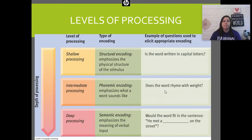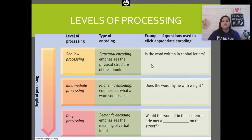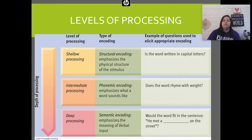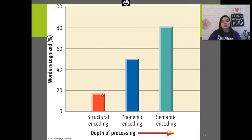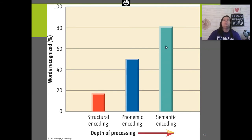We can also look at different levels of processing — how deeply we process information. At a shallow level, we look at structural components: was it written in capital letters, what font was it in? Intermediate processing considers what the word sounds like — phonemics — like whether it rhymes with another word. Deep processing is semantic encoding: we remember things best when we emphasize what they actually mean, such as whether a word fits a sentence because of its semantics. Semantic encoding is the strongest; structural encoding is weakest, with phonemic in between.